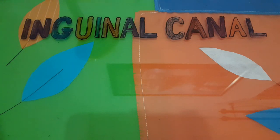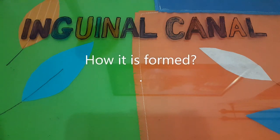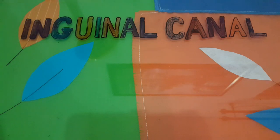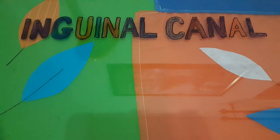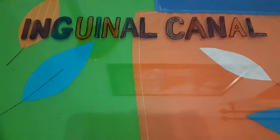In order to understand the inguinal canal we should first know how it is formed. During embryonal life, testes are formed in the abdomen whereas their final destination is in the scrotum. So they have to pass through the abdominal wall in order to reach the scrotum. The path that the testes take through the abdominal wall to reach the scrotum is called the inguinal canal, as it is present in the inguinal region.